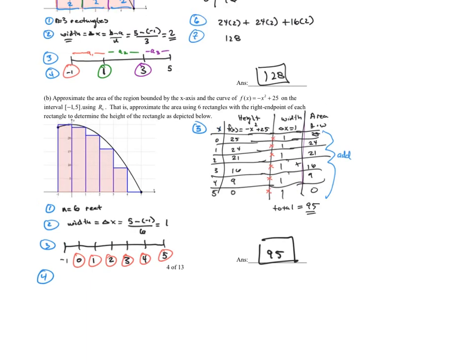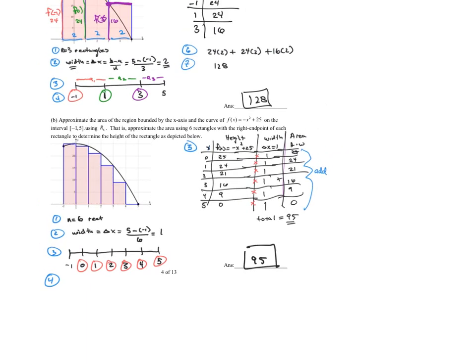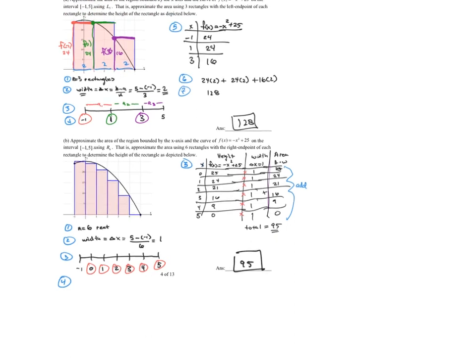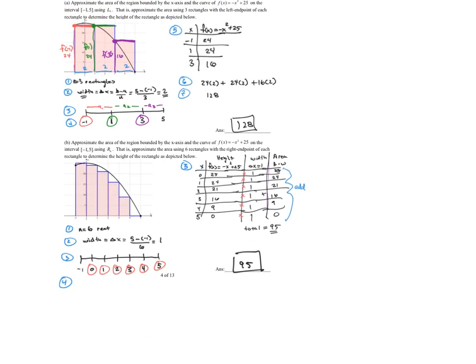Looking at the picture, this looks like an underestimation. So we know 128 is an overestimation and 95 is an underestimation. So the actual area beneath that curve is somewhere between those two numbers.